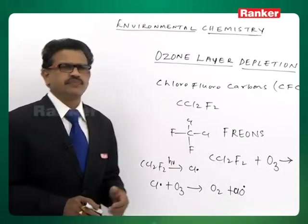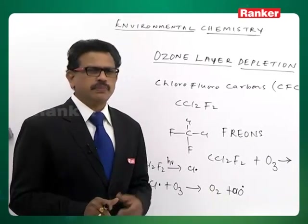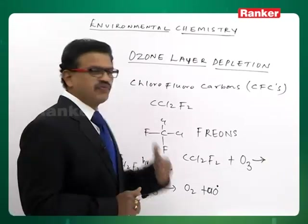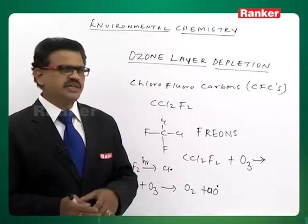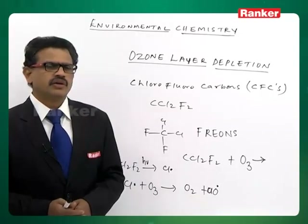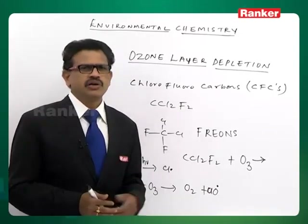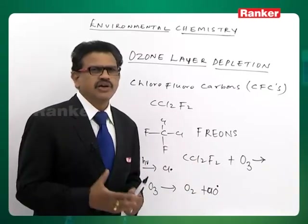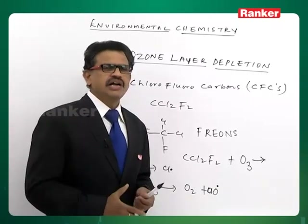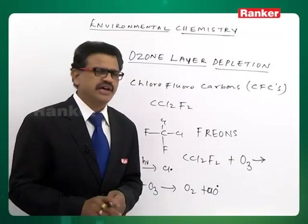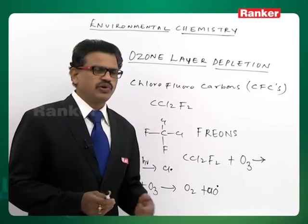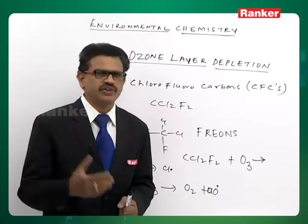How do we control ozone layer depletion? We can control it by not producing or not utilizing chlorofluorocarbons for refrigeration processes. Instead of using freons, though they are cheaper, we can go for non-chlorinated, non-CFC-containing refrigerants like liquid ammonia. Alternative refrigeration systems used in air conditioning are also available. Nowadays we are using substitutes for CFCs named R22, R23, and similar compounds.